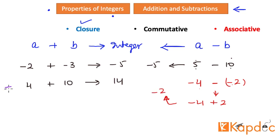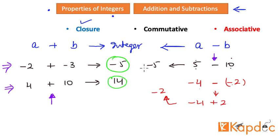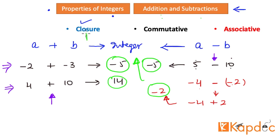Whether you take two positive numbers or two negative numbers, and whether you perform addition or subtraction, it always results in a number that belongs to the set of integers. That is exactly what closure tells us — under addition and subtraction, the closure law for integers always applies for both operations. This is the closure property of integers.